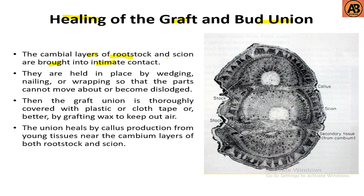In healing of the graft and bud union, the cambium layers of rootstock and scion are brought into intimate contact. They are held in place by wedging, nailing, or wrapping so that the parts cannot move or become dislodged. The graft union is then covered with plastic or cloth tape, or better, by grafting wax to keep out air.